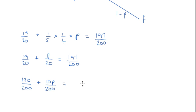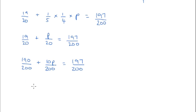Because then we can times everything by 200, and get rid of those denominators. So I can now say that 190 plus 10P needs to equal 197. If I take off 190, that means that 10P needs to equal 7, and therefore P is equal to 7 over 10.